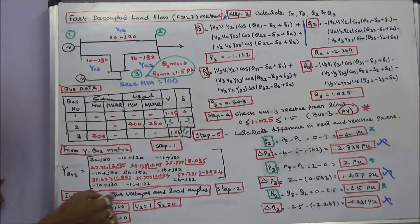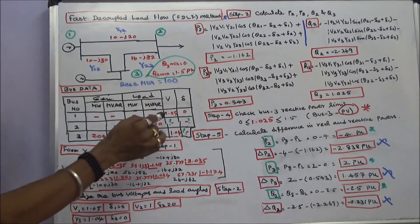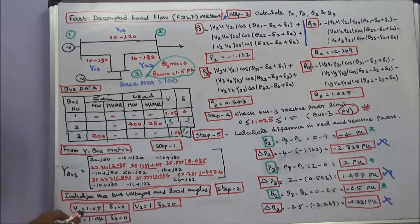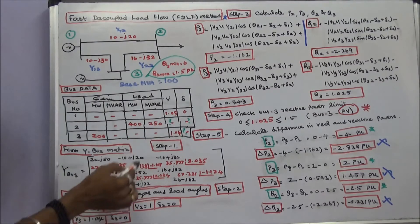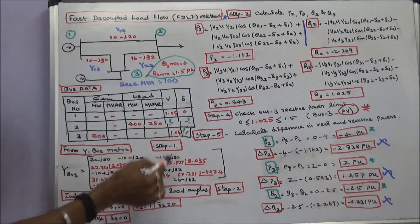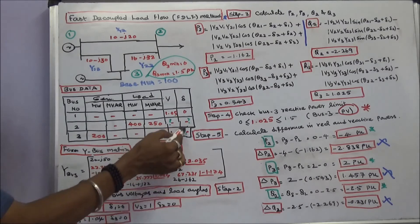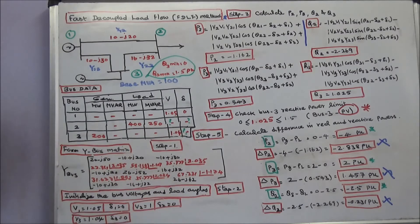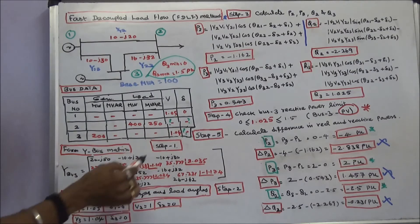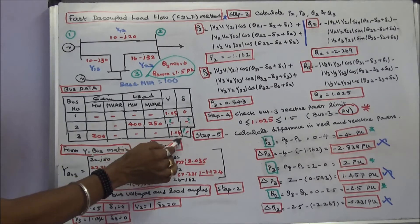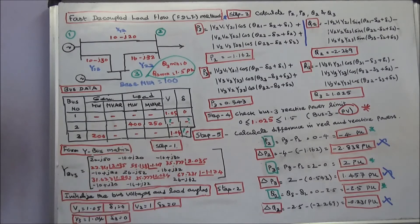Step 2: Initialize the bus voltages and load angles. V1 equals 1.05, delta 1 equals 0. V2 is assumed to be 1 per unit, delta 2 equals 0. V3 equals 1.04, delta 3 equals 0.